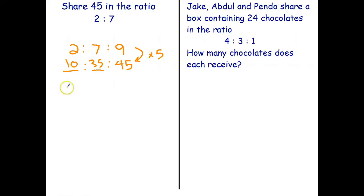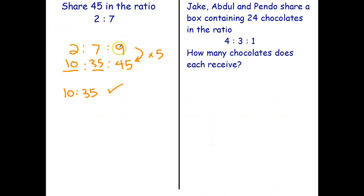Seven times five is 35, two times five is 10, and we're splitting that 45 into 10 to 35. So the basic idea behind these questions is to add one more part to your ratio — the total number of parts — and then it's fairly easy to work from there.